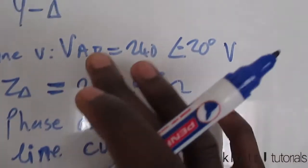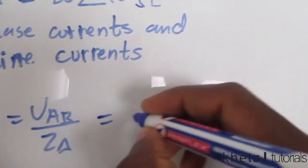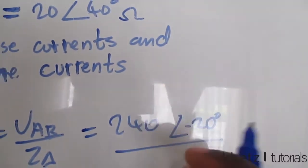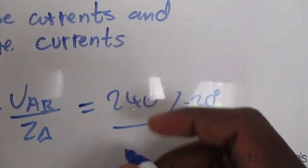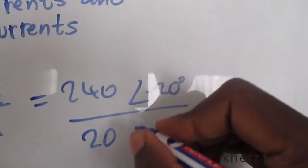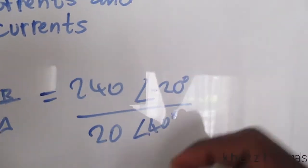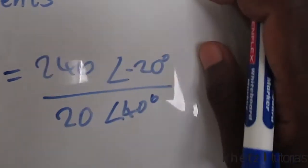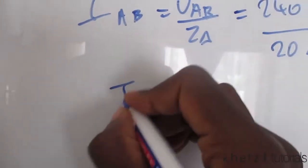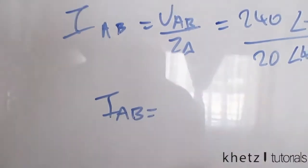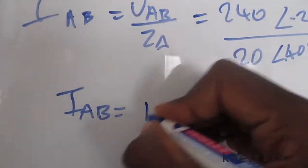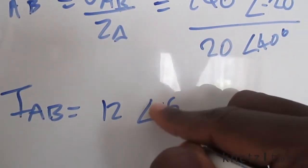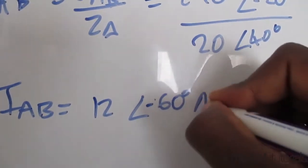We're given VAB, so we substitute 240 at an angle of negative 20 degrees divided by the phase load of 20 at 40 degrees. From this you should get a phase current IAB of 12 at an angle of negative 60 degrees, in amperes.